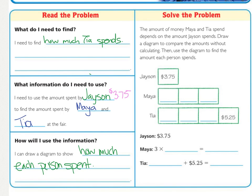And so, now to actually solve the problem. The amount of money Maya and Tia spend depends on the amount Jason spends. So, draw a diagram to compare the amounts without calculating. So, they don't want you to do any work right now. They want you to draw the picture. Then, we're going to use the diagram to find out the amount that each person spent.